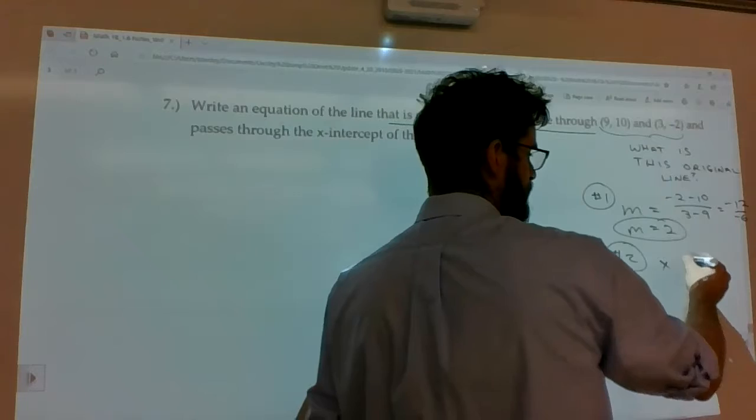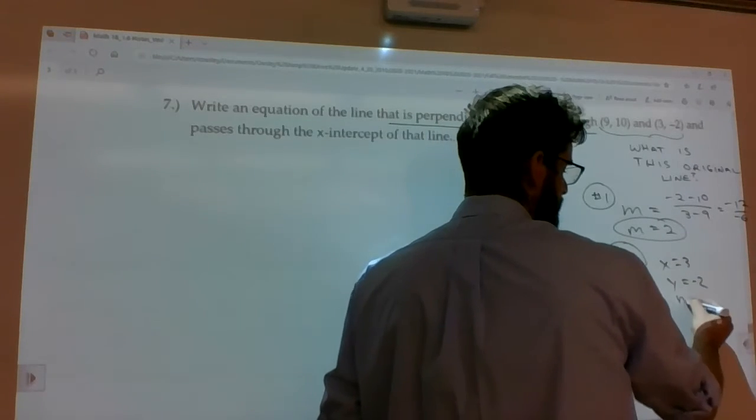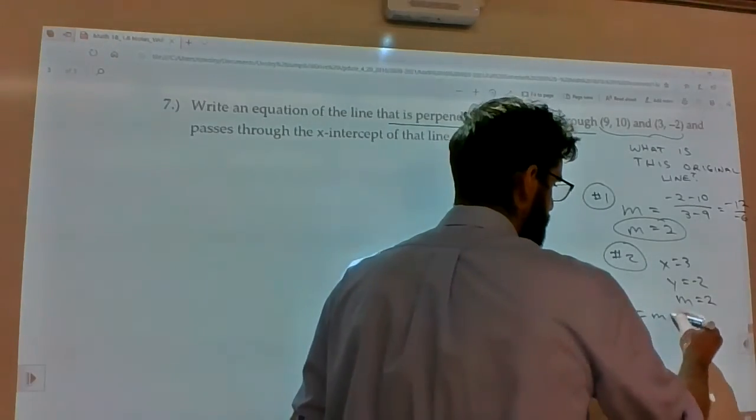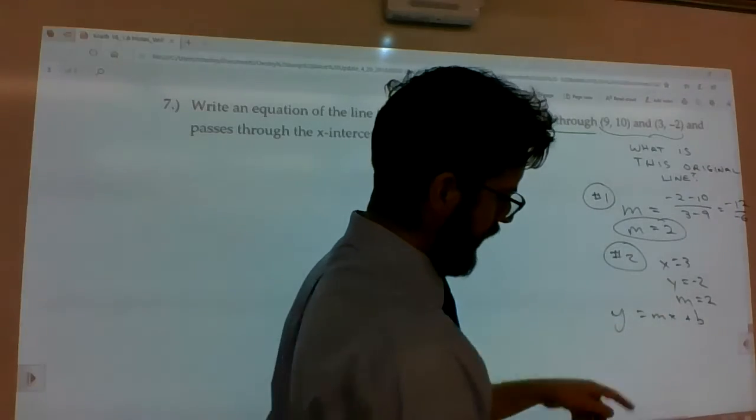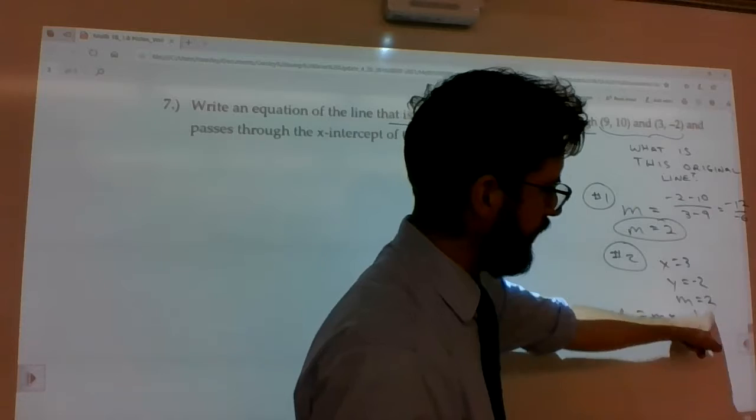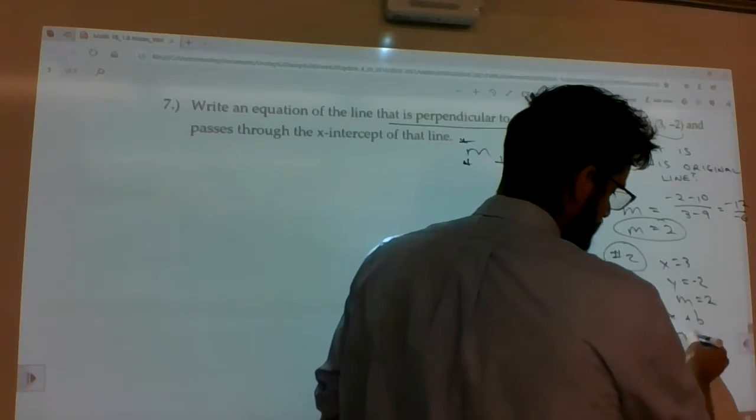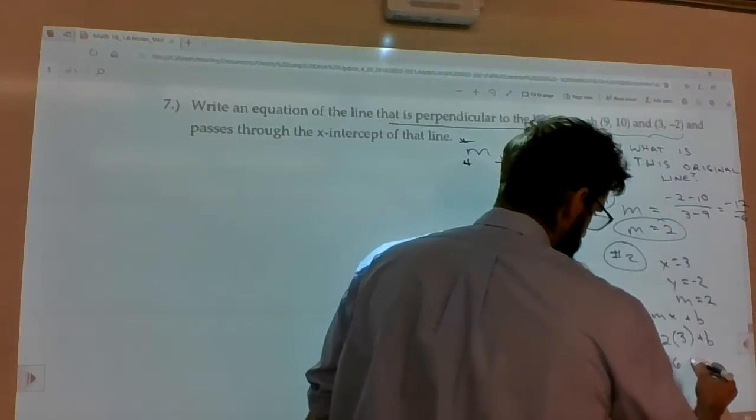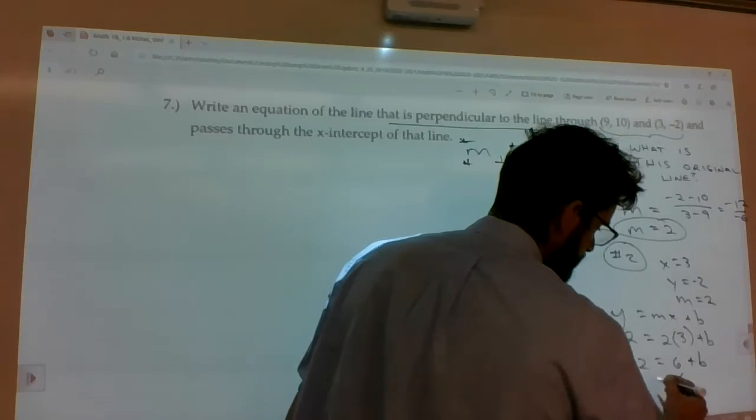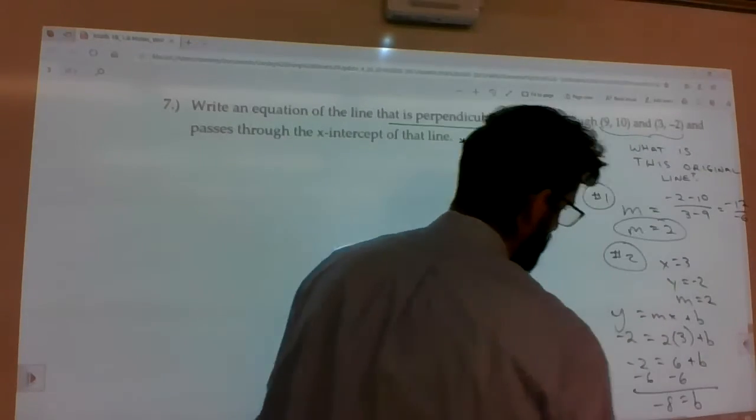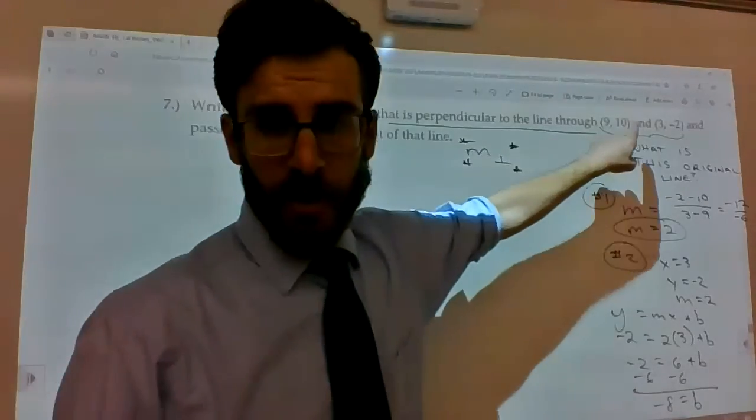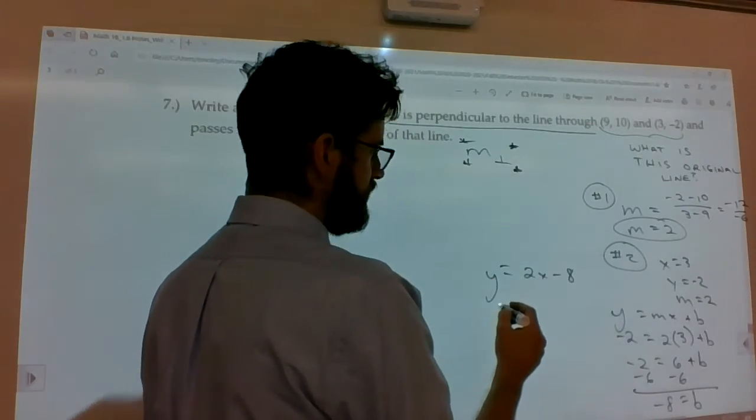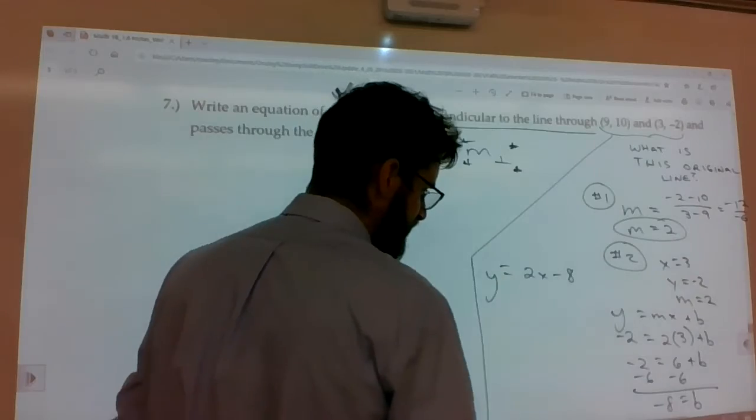Then you pick an x and a y and use the m equals 2. So, I'm going to go with x equals 3, y equals negative 2, and m equals 2. Plug them in for y equals mx plus b. So, negative 2 for y, 2 for m, 3 for x. And then solve for b. Subtract the 6 from both sides. And we should have the equation of that unknown line being y equals 2x minus 8. So, this is the original line.